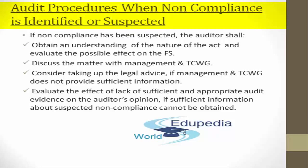First: audit procedures when non-compliance is identified or suspected. You, being the auditor, went for an audit and got to know that non-compliance regarding some laws and regulations has been done by the company — either identified or suspected. So what should your audit procedures be? First of all, if you as auditor become aware of information concerning an instance of non-compliance or suspected non-compliance with laws and regulations, then you shall obtain an understanding of the nature of the act and the circumstances in which it has occurred.